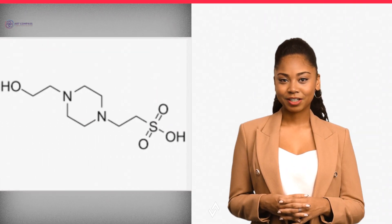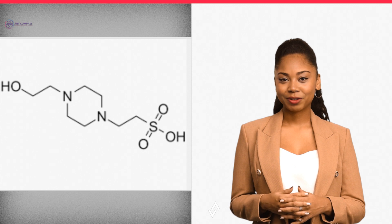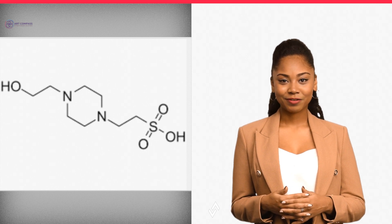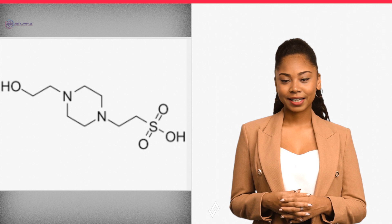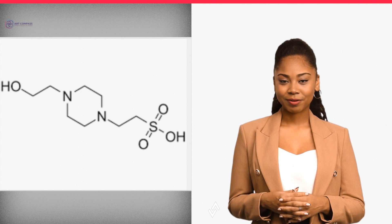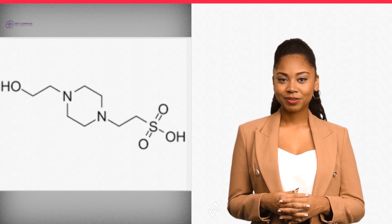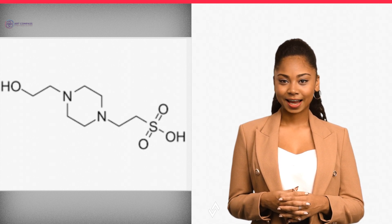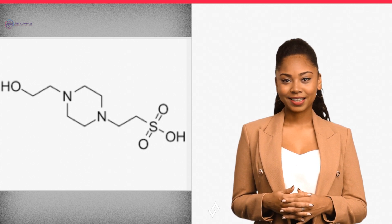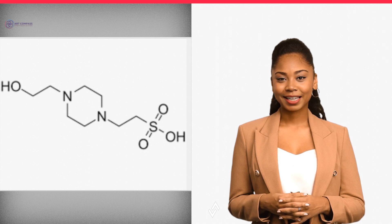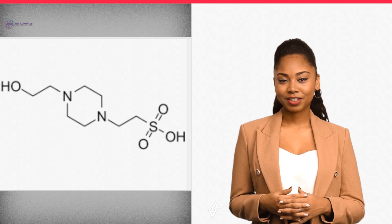A widely used zwitterionic cell culture buffer is HEPES, which was first introduced in 1966 by Good et al. As a replacement for bicarbonate buffer in cell culture media, HEPES has become popular due to its high buffering capacity at physiological pH, its compatibility with a wide range of cell types, and its ability to maintain pH over a broad temperature range.